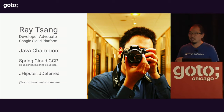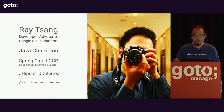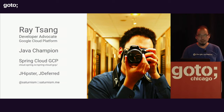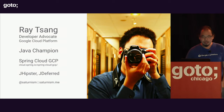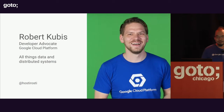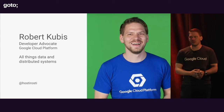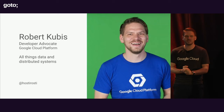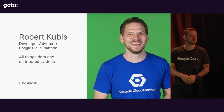I helped start a project called Spring Cloud GCP. So if you're using Java and Spring and Spring Boot, give it a try. If you have any questions, you can find me on Twitter at Saturnism, and all materials are on my website, Saturnism.me. Today I also have my co-worker Robert join me. He's also a Cloud Developer Advocate with similar years of experience, mostly in the database and storage space. You'll find him on Twitter at HossiRossi.